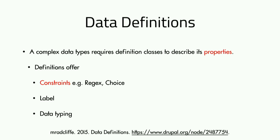What is a data definition? That's where we describe properties — similar to base field definitions in the Entity API, but much lower level; you're only defining properties. Definitions offer constraints such as regex, choice, and all the Symfony constraints we're getting used to. You can assign labels and descriptions. Each data definition describes another data type. The definition describes properties of a data type, while the data type is the logical means of representing the data.